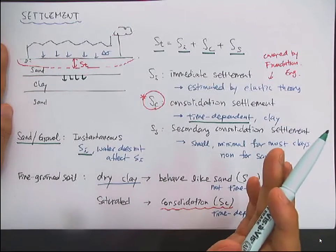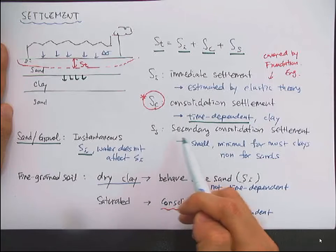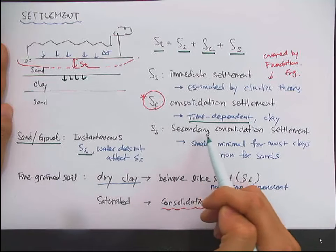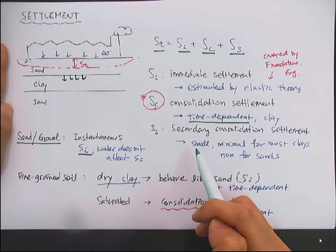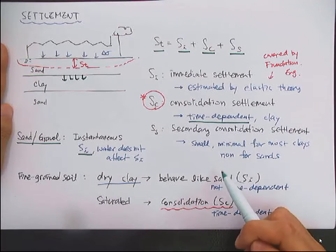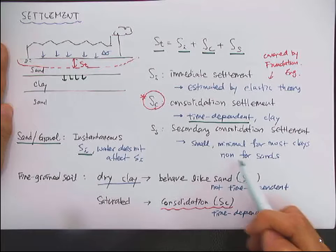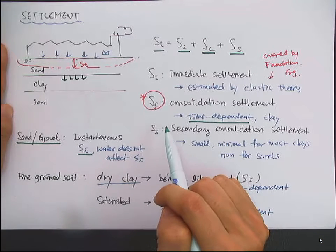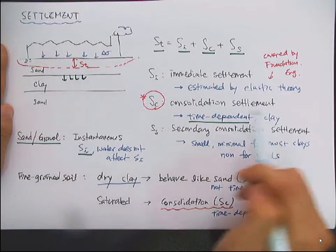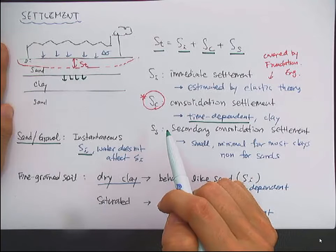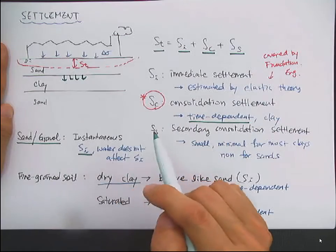After consolidation settlement, after all the water has escaped, you have a creeping behavior, which is called secondary consolidation. This secondary consolidation settlement is relatively small compared to the consolidation settlement, and minimal for most clay. And there is very little for sand. So in this class, we mainly focus on the consolidation settlement and how to estimate the amount of consolidation settlement occurring in the clay layer when you apply a certain amount of stress.